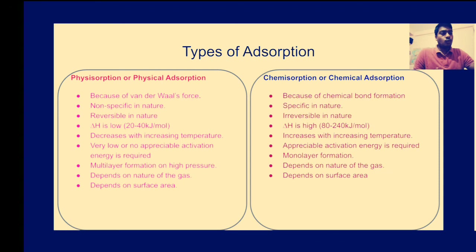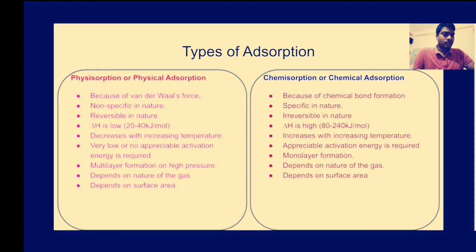Chemisorption requires an appreciable amount of activation energy since it involves a chemical process. Once a site is bonded to an adsorbate molecule, that site is blocked and cannot accommodate a second adsorbate molecule, so chemisorption always leads to monolayer formation — unlike physisorption. It also depends on the nature of the gas and surface area. The dependence on nature of gas and surface area are common to both types, while all other properties represent differences between chemisorption and physisorption.